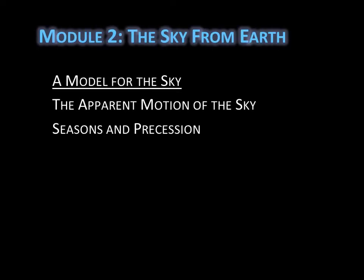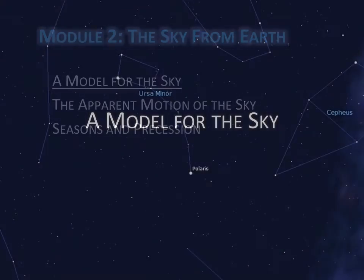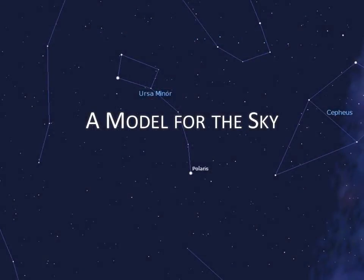Hello! In this lecture, we're going to talk about the model for the sky known as the Celestial Sphere and how we describe locations of objects in our sky. So let's get started. We'll begin with constellations.